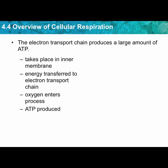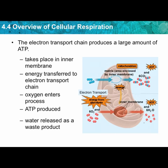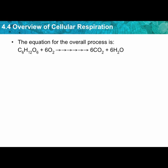ATP is produced and water is released as a byproduct. So in the first part, carbon dioxide is released as a byproduct; in the second part, water is released as a byproduct. Our two waste products of cellular respiration are carbon dioxide and water, and what we produce is a lot of ATP — from sugar and oxygen.